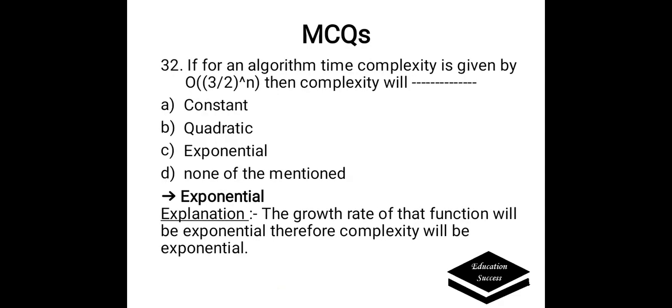If for an algorithm time complexity is given by O((3/2)^n), then complexity will be: a) constant, b) quadratic, c) exponential, or d) none of the mentioned. Correct answer is exponential. The growth rate of that function will be exponential, therefore complexity will be exponential. Thank you for watching this video. Kindly like and subscribe the channel, and don't forget to share. Thank you.